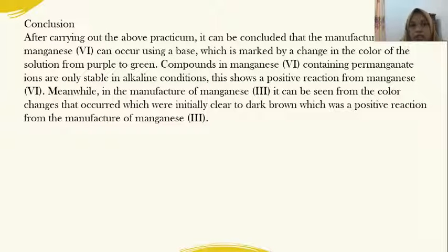After carrying out the above practicum, it can be concluded the manufacture of Mn(VI) can occur using a base, which is marked by a change in the color of the solution from purple to green. Compounds in Mn(VI) containing permanganate ions are only stable in alkaline conditions.